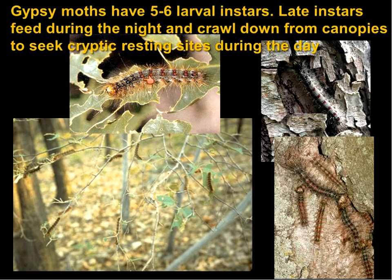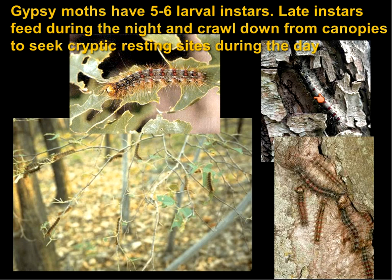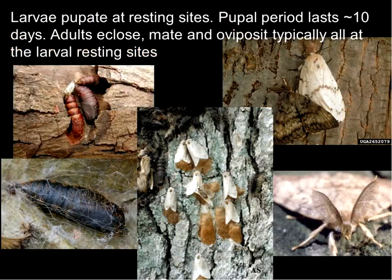In most populations, gypsy moth larvae actually feed on foliage during the night. In the morning, larvae crawl down out of the foliage canopy and seek cryptic resting sites — very often in bark crevices, or some crawl all the way down to the forest floor and hide under logs. We don't really know exactly why they do this evolutionarily, but we tend to think they may be trying to avoid predation by birds or parasitism. Interestingly, during very high-density populations the larvae basically stop this diurnal migration and feed continuously 24 hours a day.